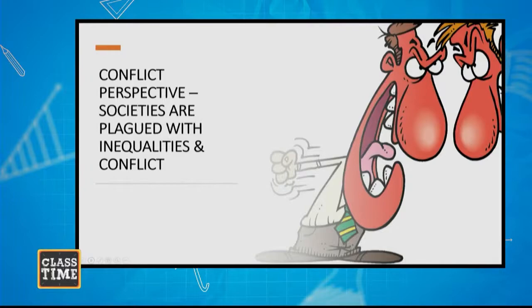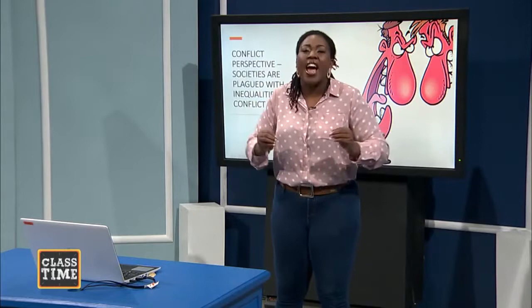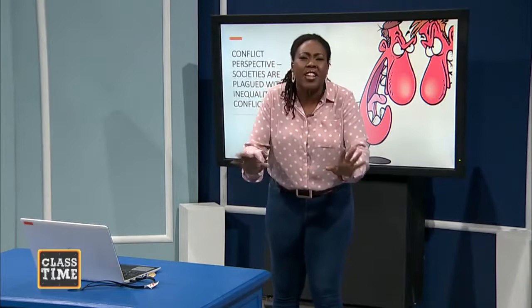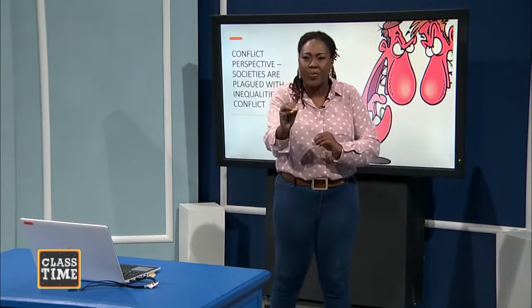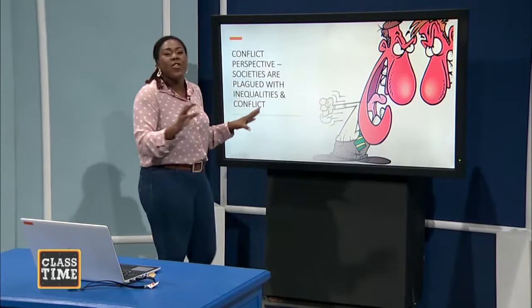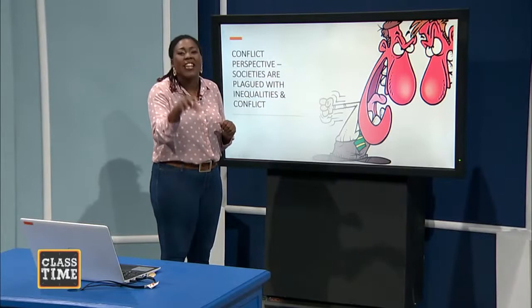When we did functionalism, people like Emile Durkheim said that society exists because we have all these functional institutions doing what they're supposed to be doing. As a result, there is very little conflict in society. In fact, the major criticism of the functionalists is that they're utopian — they have this perfect view of society. The conflict perspective said that doesn't make sense at all, because if you look at societies in general, they're always filled with inequalities and, as a result, conflict. From the beginning of time, all societies have looked like that.